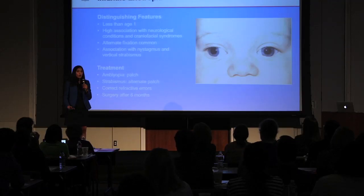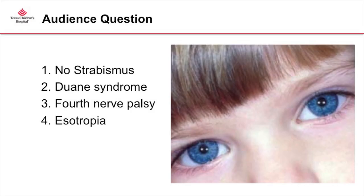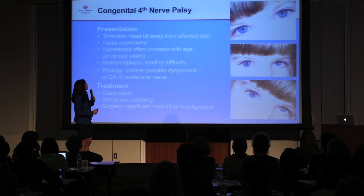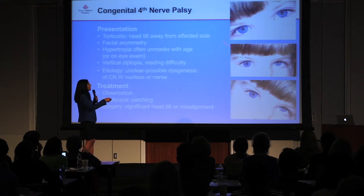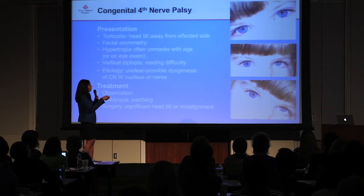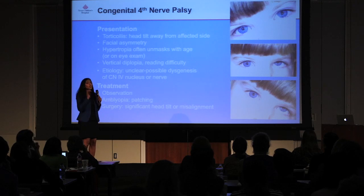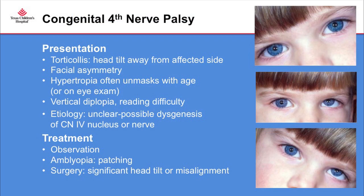If there's no significant refractive error and this amount of drifting out, we will consider surgery after age six months. Regarding the next case — it's a picture of an older child with a head tilt — this patient has a fourth nerve palsy. The light reflexes appear centered, but the clue is the head tilt. When you put the head in primary position, the patient has a significant left hypertropia, and when they tilt the head the other way they also have a left hypertropia.